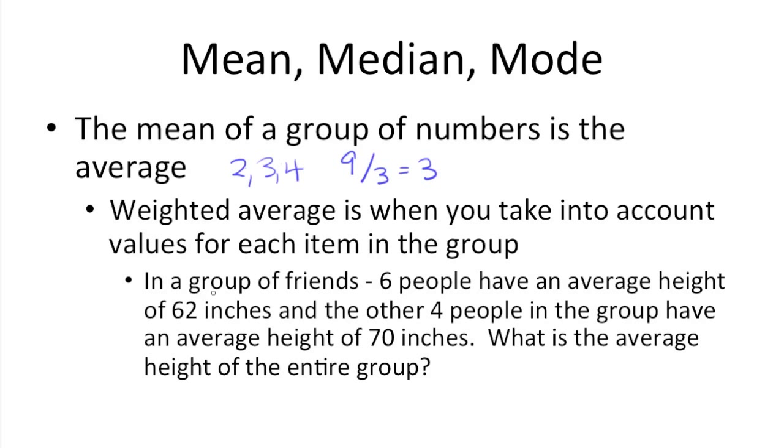Now moving on to weighted averages, you need to take into account the value of each item in the group. So here's a sample problem. We have 6 people with an average height of 62 inches, and the other 4 people in the group have an average height of 70 inches. What's the average height of the entire group?